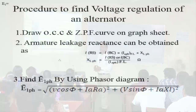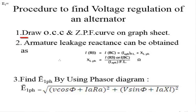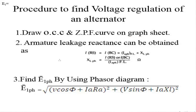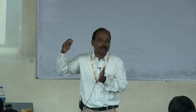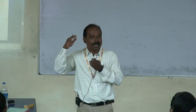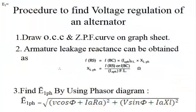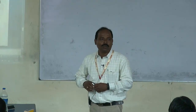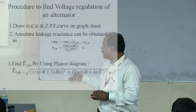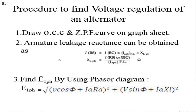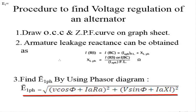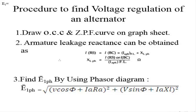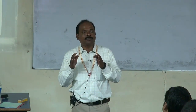The step-by-step procedure for voltage regulation by ZPF method is as follows. Step 1: Draw both the OCC and ZPF curves on the graph sheet. Step 2: Find the IA XL drop from the graph using the Potier triangle — XL equals length of RS divided by full armature current. Step 3: Using the formula E1(ph) = √[(V cos φ + IA Ra)² + (V sin φ + IA XL)²], calculate E1, the voltage induced allowing for armature reaction drop.